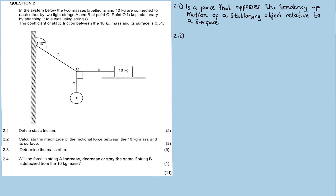Question 2.2: Calculate the magnitude of the frictional force between the 10 kg mass and its surface. Here we need the static friction. Static friction is calculated using the formula: static friction equals mu-s, the coefficient of static friction, times the normal force.